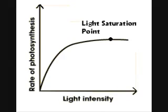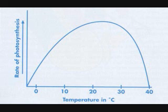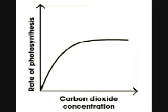As light intensity increases, the rate of photosynthesis increases as well, but then levels off after it reaches a maximum point — the light saturation point. As temperature increases, the rate of photosynthesis also increases, but after temperature has gone too high, it begins to decline. As the CO2 concentration increases over the oxygen concentration, the rate of photosynthesis increases.